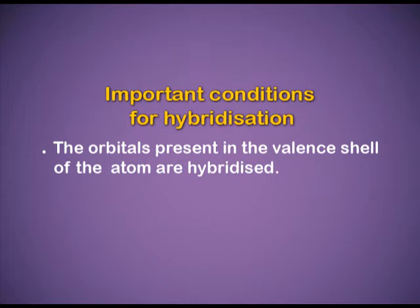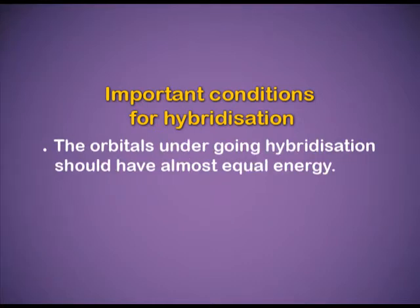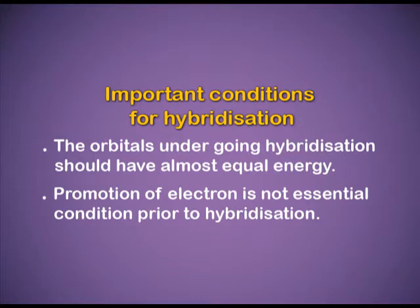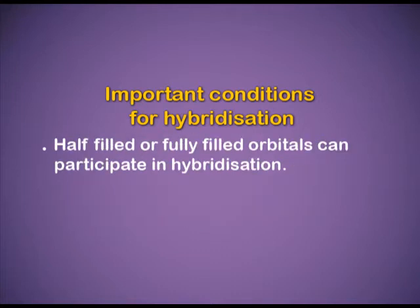Important conditions for hybridization: the orbitals present in the valence shell of the atom are hybridized. The orbitals undergoing hybridization should have almost equal energy. Promotion of electrons is not an essential condition prior to hybridization. Half-filled or fully filled orbitals can participate in hybridization.